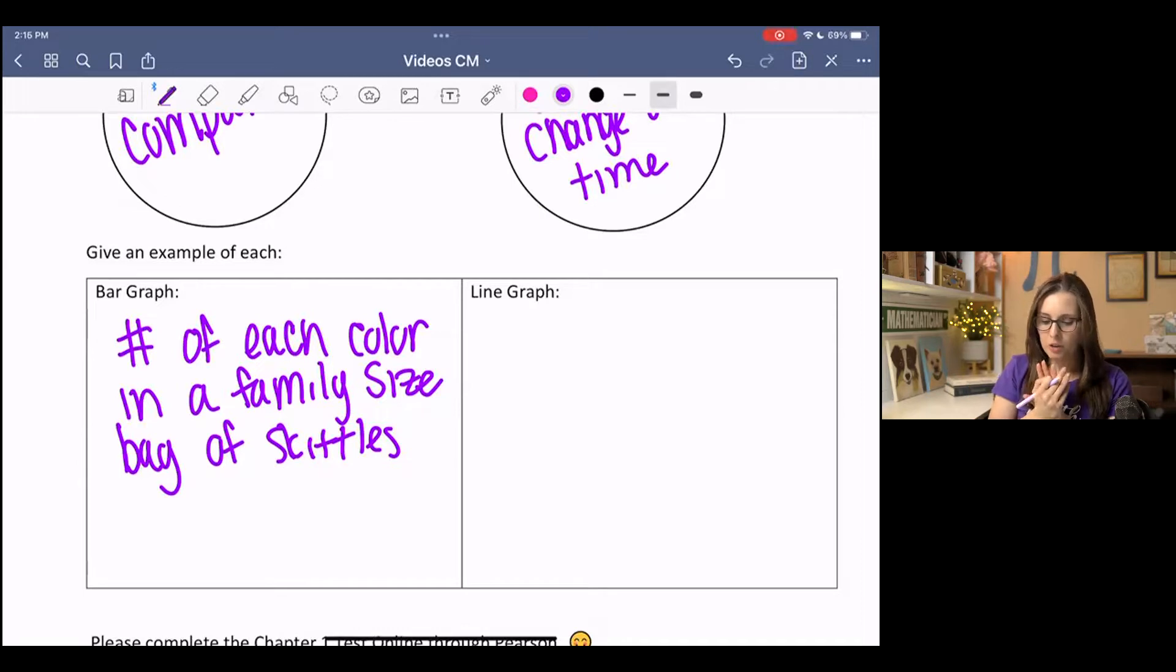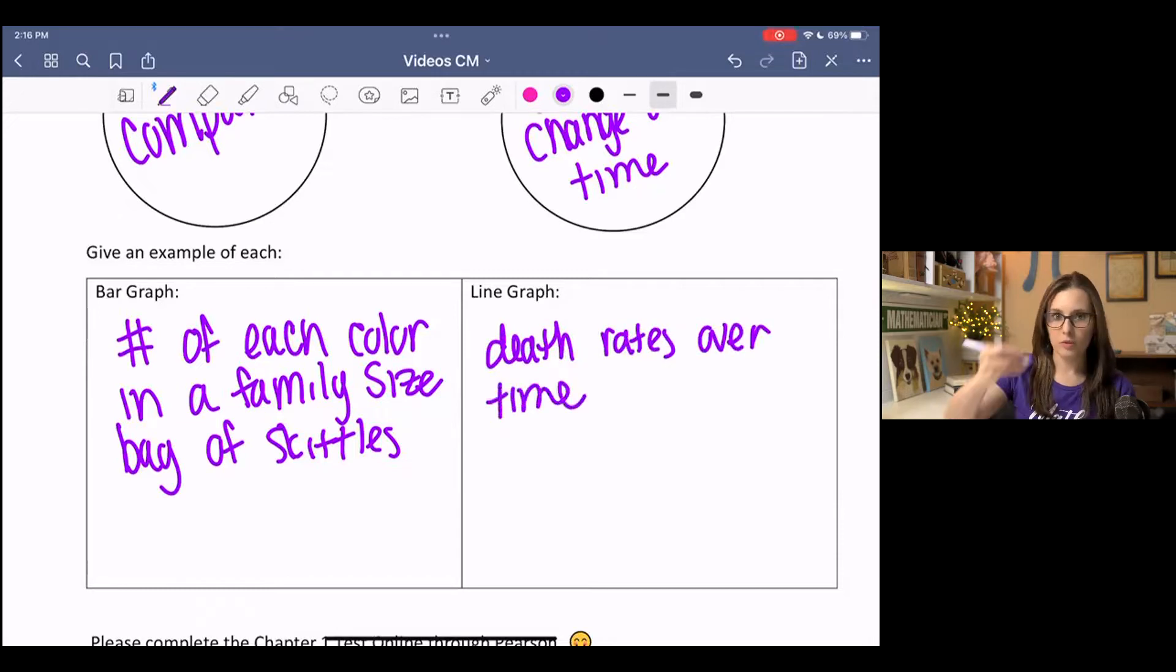And then a line graph, one of the popular uses of a line graph is like birth rates over time or death rates over time. And that's just going to show you if it's going up or down, trending up or down. So that's just some examples of that.